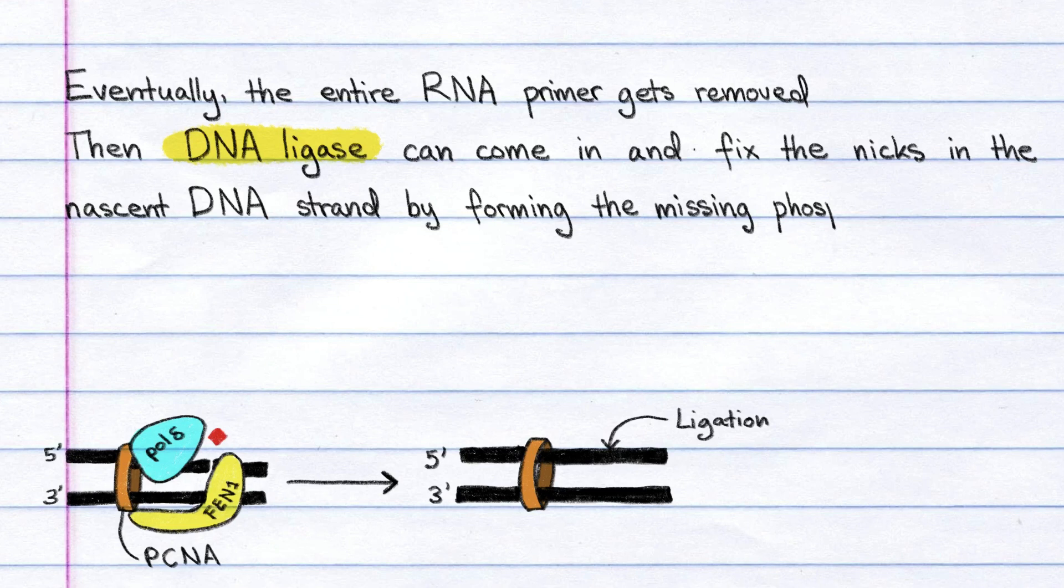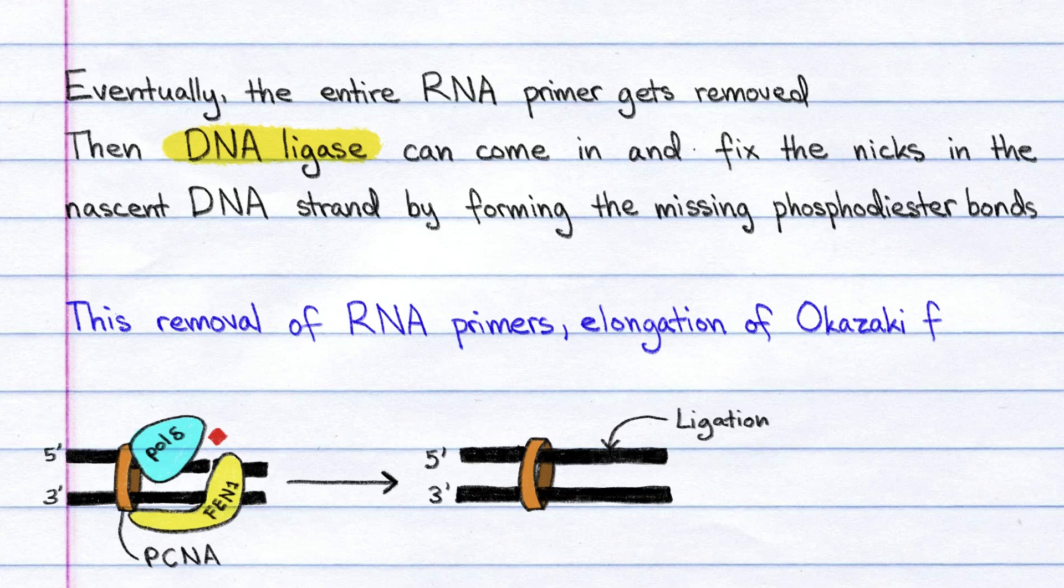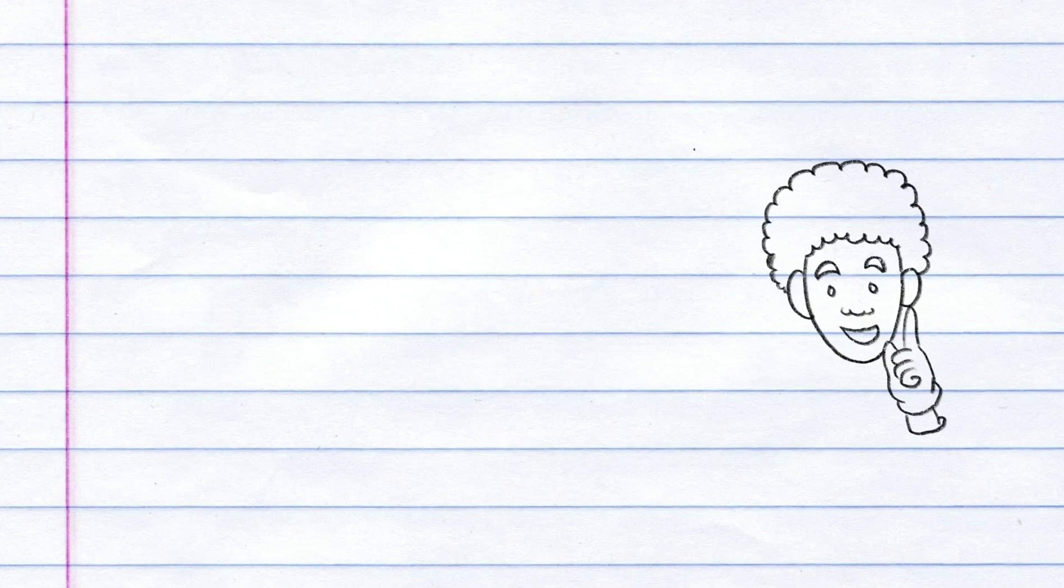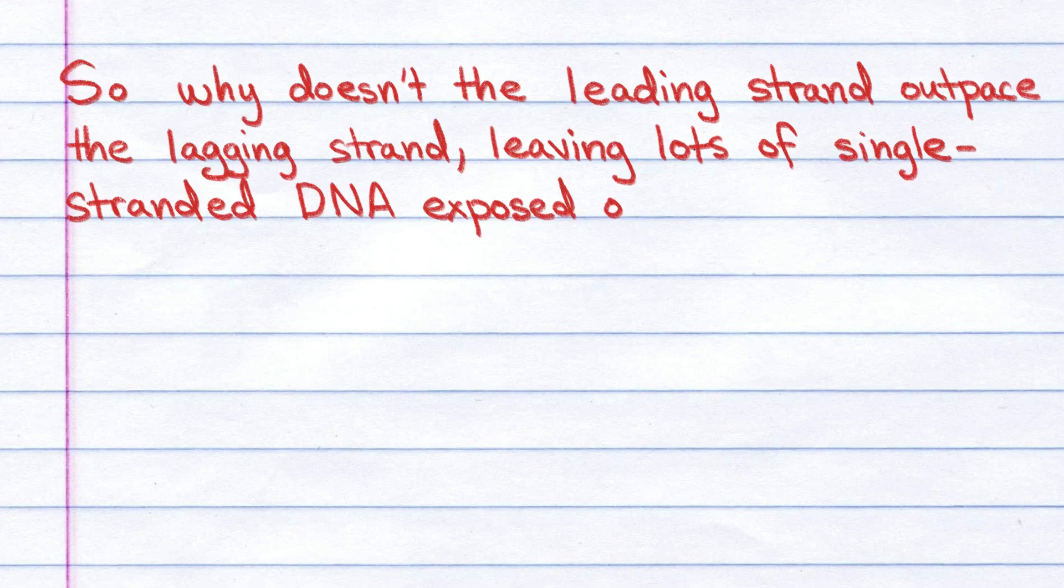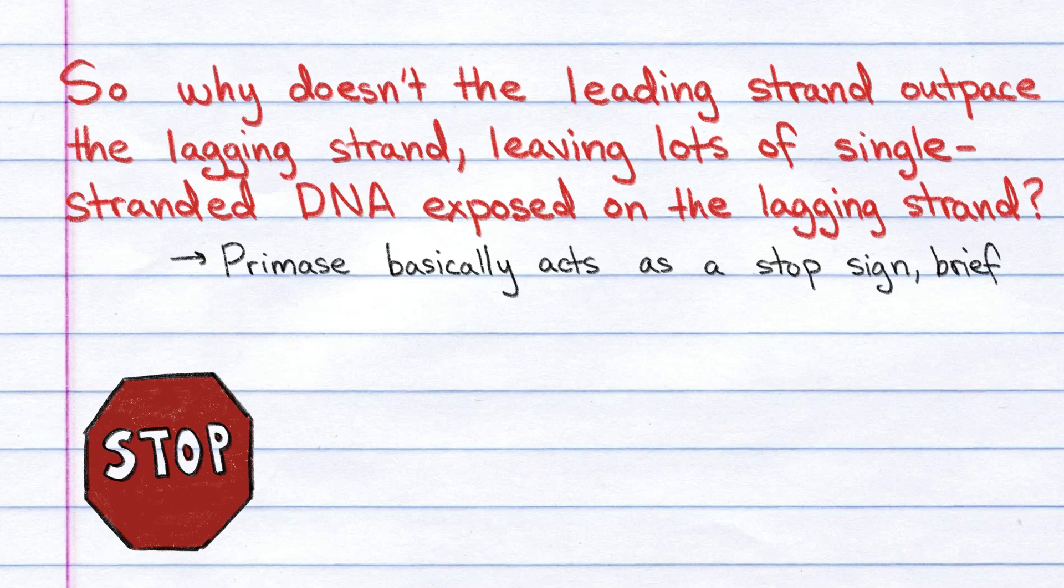This removal of RNA primers, elongation of Okazaki fragments, and ligation is called the maturation of Okazaki fragments. Now you can see why the lagging strand is synthesized much more slowly than the leading strand. So why doesn't the leading strand outpace the lagging strand, leaving lots of single-stranded DNA exposed on the lagging strand? Well, the primase basically acts as a stop sign, briefly halting the progression of the replication fork.